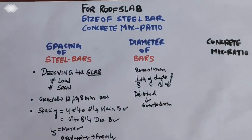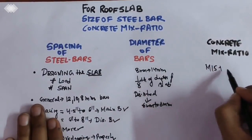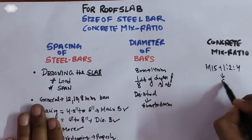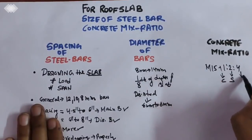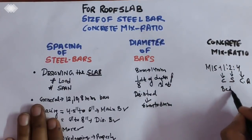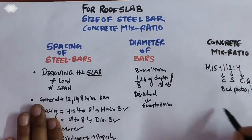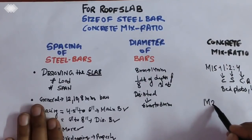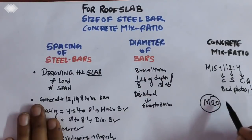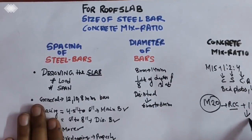Now, coming to the concrete ratio, M15 has a 1:2:4 ratio — cement, sand, and coarse aggregate. This gives high strength and is used for bed plates and lintel casting. M15 is the minimum grade for RCC.